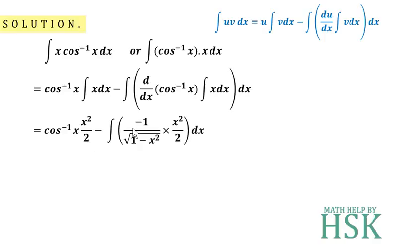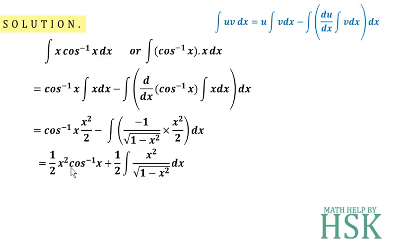This gives us: (1/2)x²·cos⁻¹(x) plus — because the minus and minus give a plus — (1/2) times the integral of x²/√(1 − x²) dx. Now we need to integrate this remaining function.